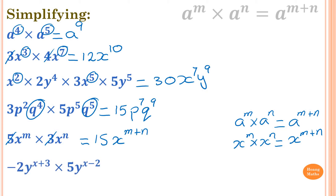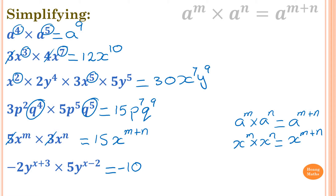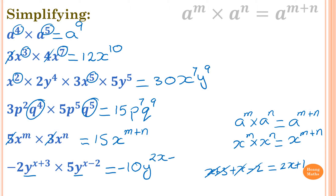Last one: minus 2y to the power of x plus 3, times 5y to the power of x minus 2. With the numbers: minus 2 times 5 is negative 10. For y to the power of x plus 3 times y to the power of x minus 2, both have the same base, so we just add the indices: x plus 3 plus x minus 2. Simplifying: x plus x is 2x, and 3 minus 2 is 1. So the answer is negative 10 times y to the power of 2x plus 1.